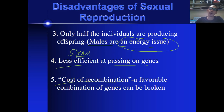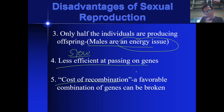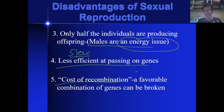Number five: the cost of recombination — a favorable combination of genes can be broken. The recombination of genes can be broken if the environment becomes unstable. The usual recombination of genes can be altered in order to make a new set of genes favorable to that particular change in the environment. When the recombination changes, it requires again another set of energy in order to make it favorable to the environment. Those are the five disadvantages of sexual reproduction.